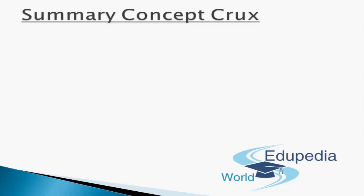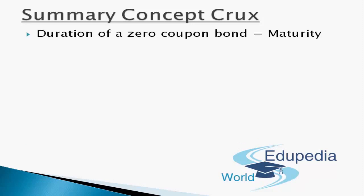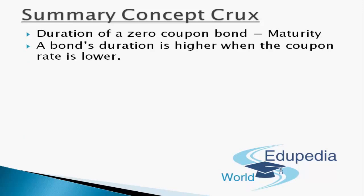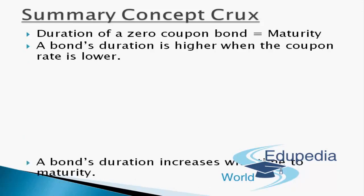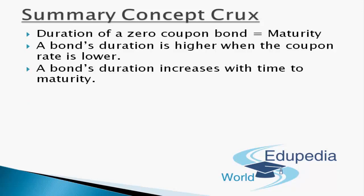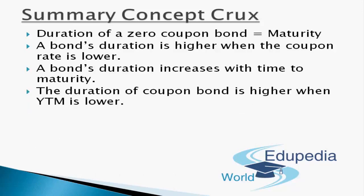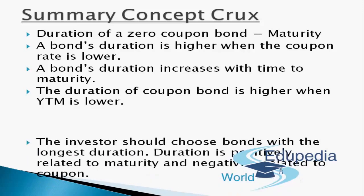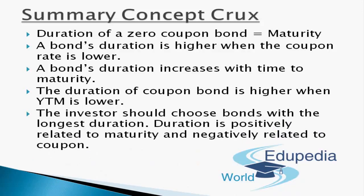To summarize the factors affecting duration: the duration of a zero coupon bond equals its maturity. A bond's duration is higher when the coupon rate is lower. A bond's duration increases with time to maturity. The duration of a coupon bond is higher when yield to maturity is lower. Investors should choose bonds with the longest duration, as duration is positively related to maturity and negatively related to coupon rate.